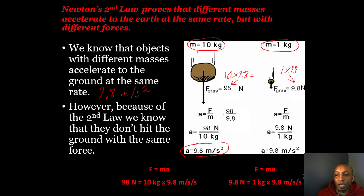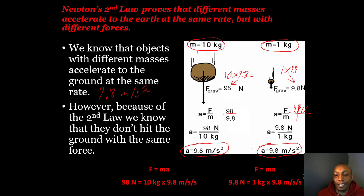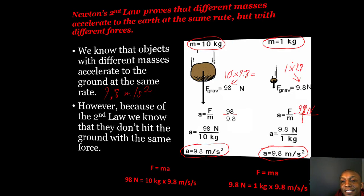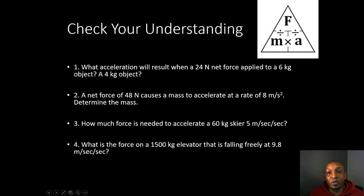For the second rock, acceleration equals force divided by mass: 9.8 Newtons divided by 1 kilogram gives us an acceleration of 9.8 meters per second squared as well. So both rocks accelerate at the same rate to the ground, even though they have different masses.